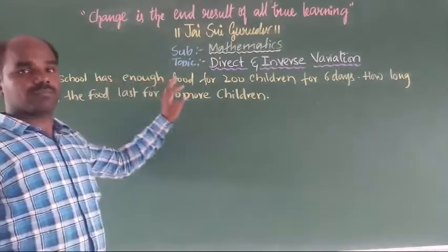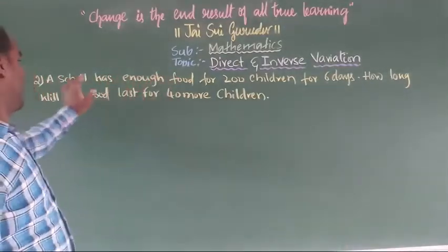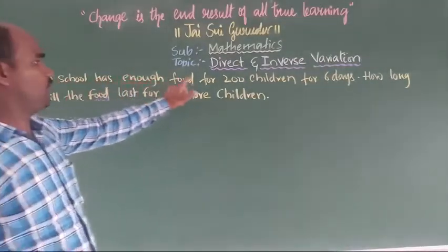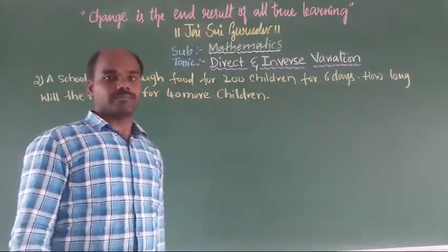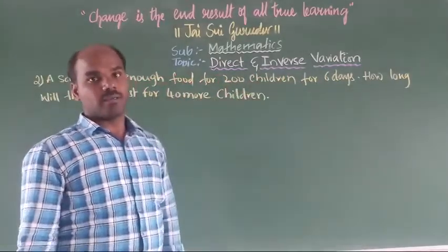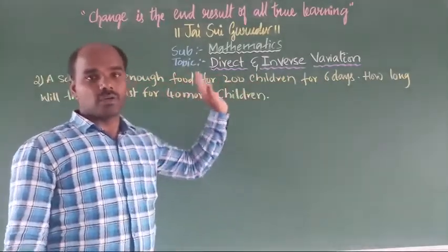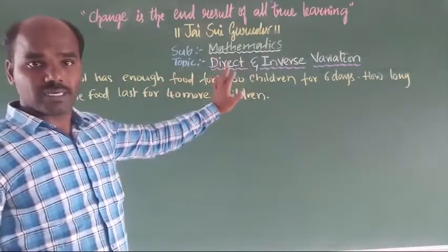Let us observe the next question. A school has enough food for 200 children. In government schools there is provision of food for the children.